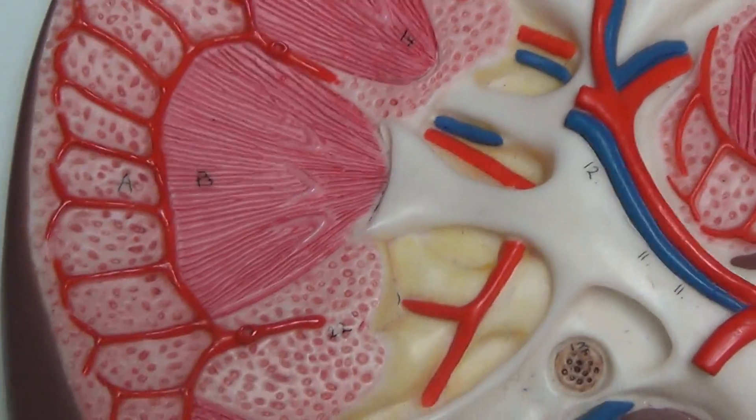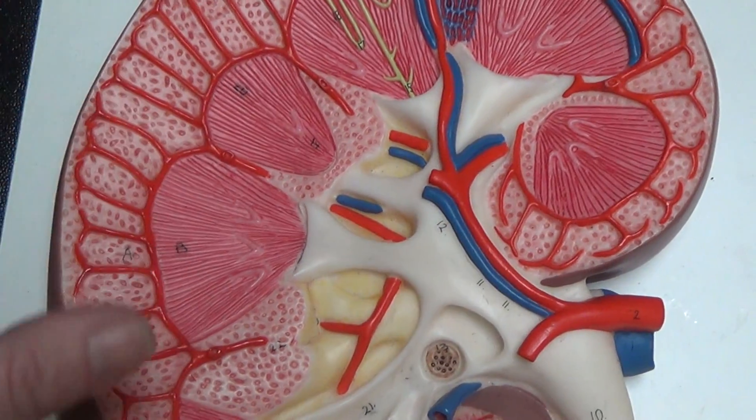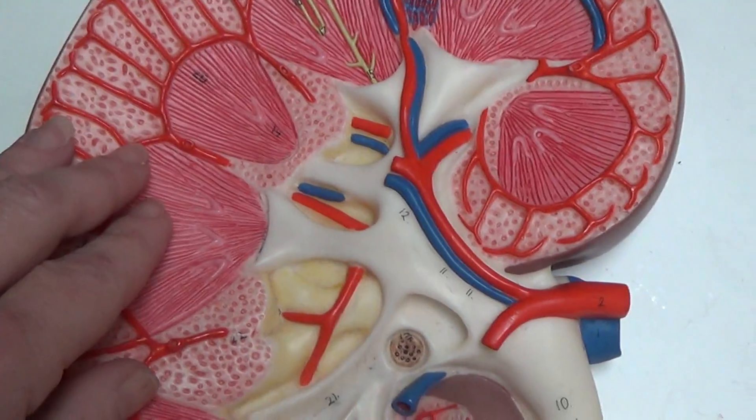So the column, the cortex, the medulla are important because these are forming the urine.